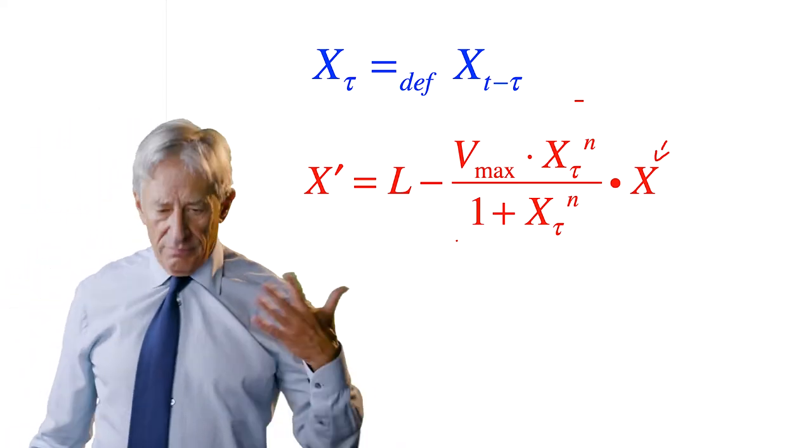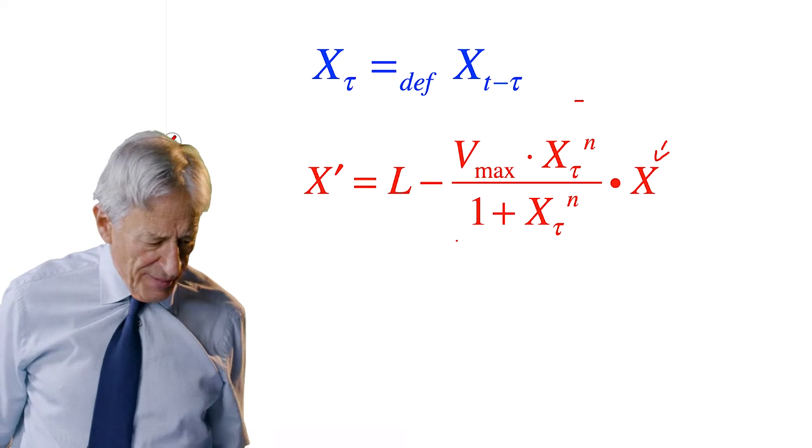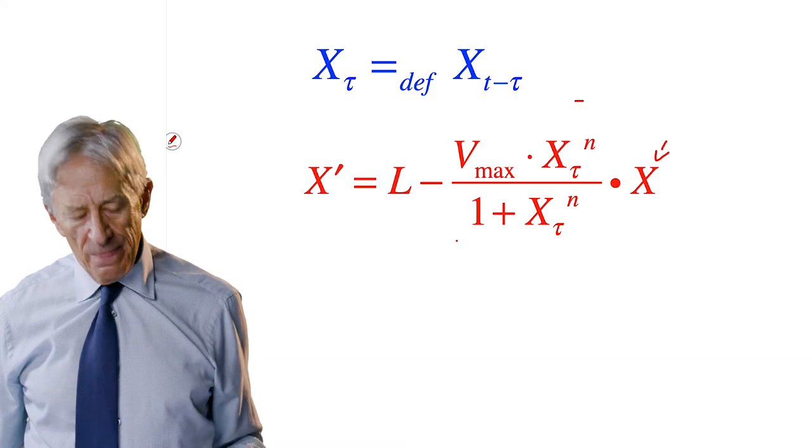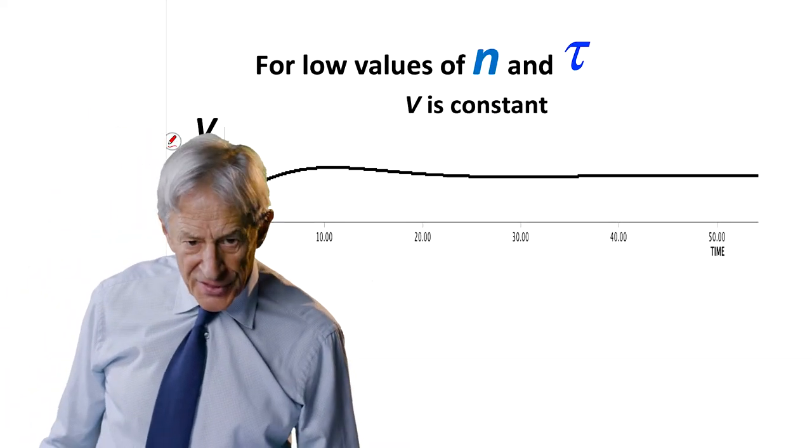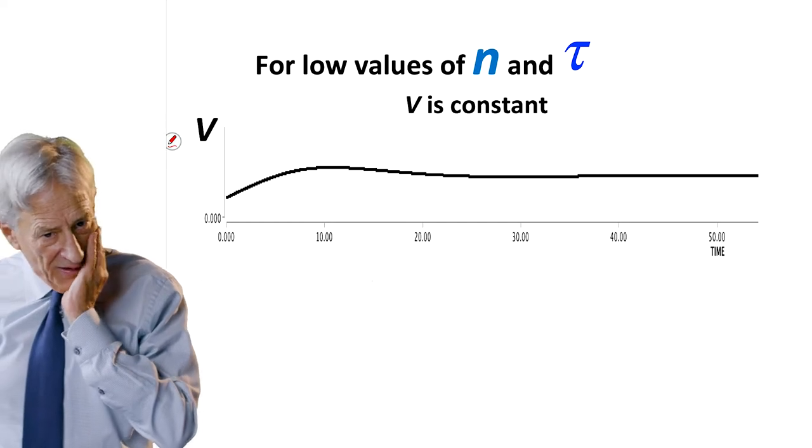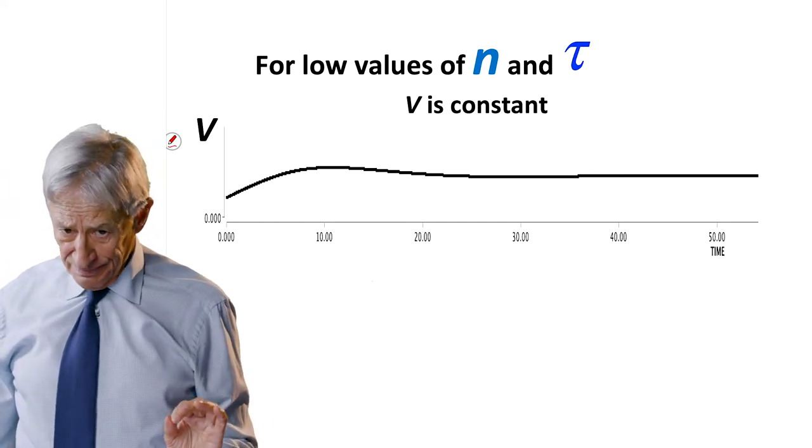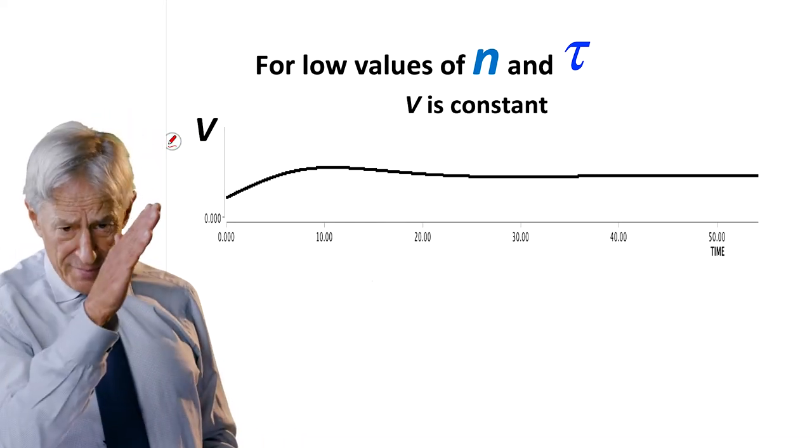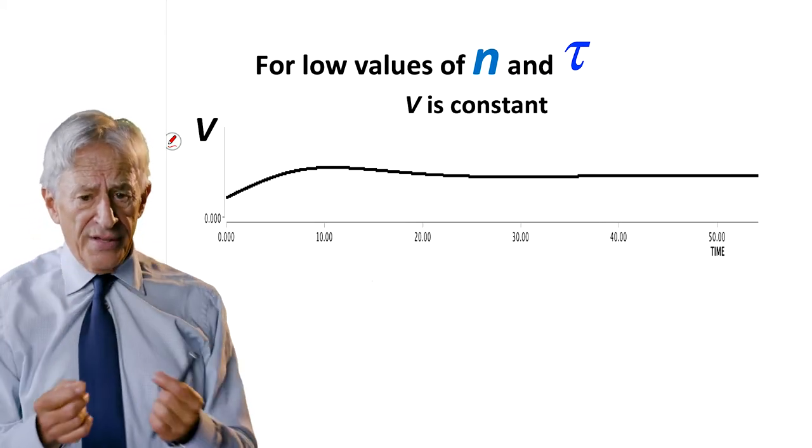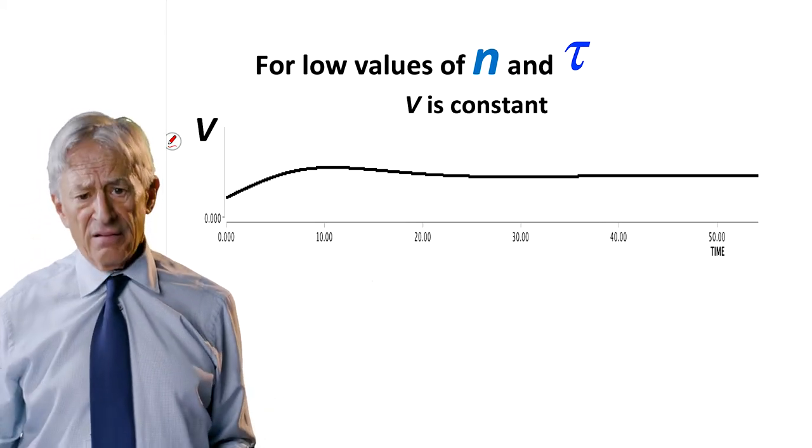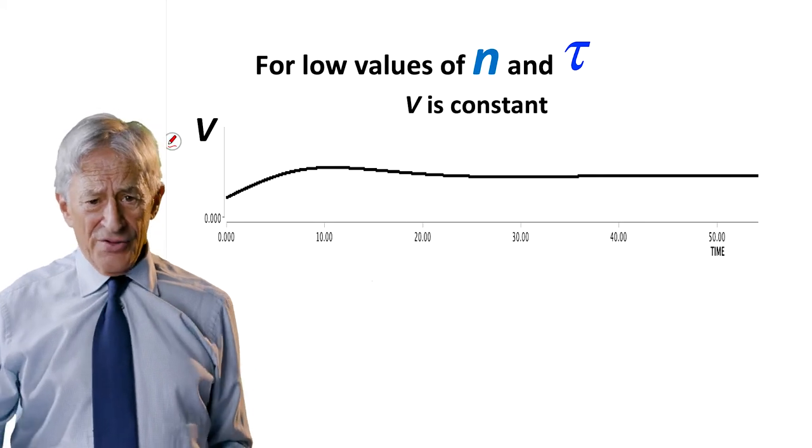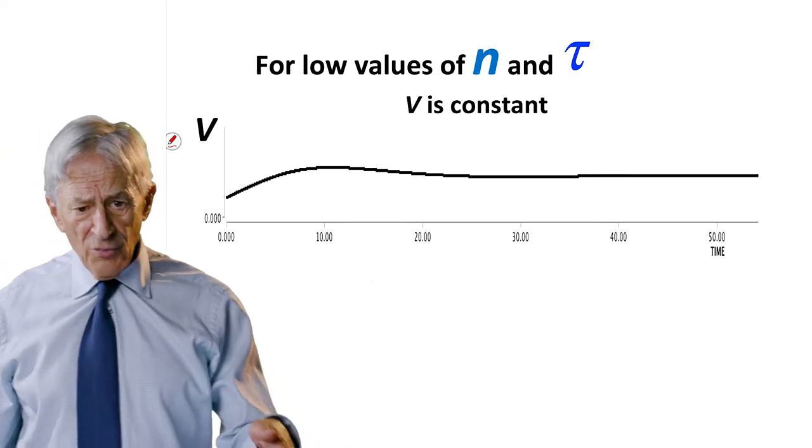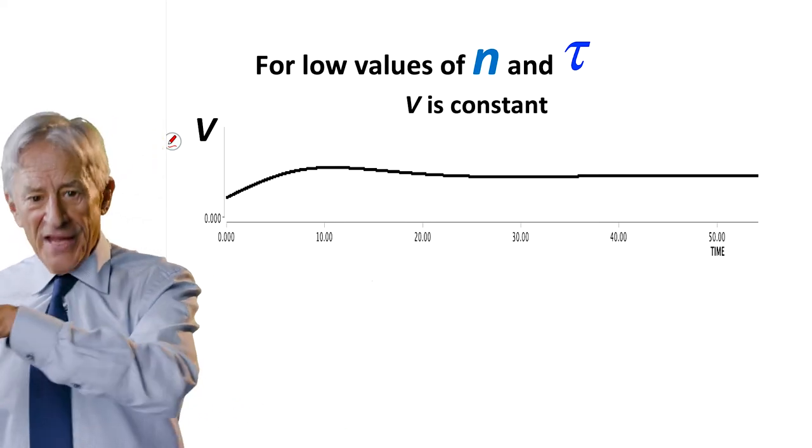And we want to know how does it behave. So we bring up Python and we code this up. And we start to look at the response. So the first interesting response is that for low values of N and tau—now remember N is the slope of the feedback, tau is the time delay in the feedback—so for low values of N and low values of tau, we get a very nice approach to a stable equilibrium.